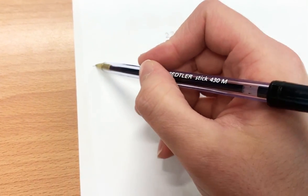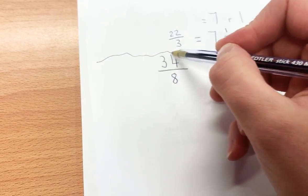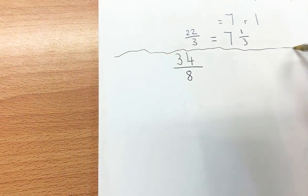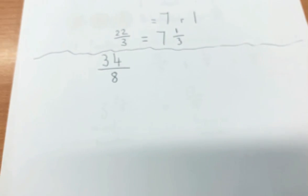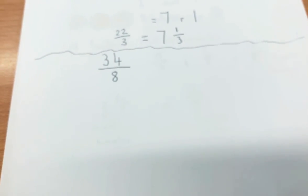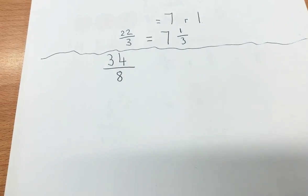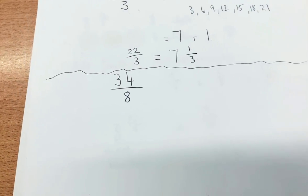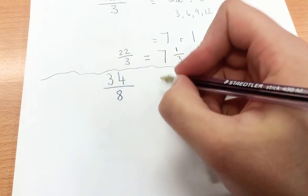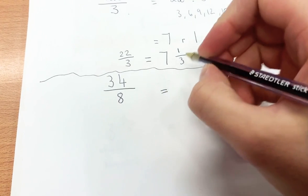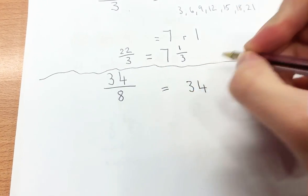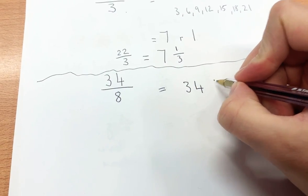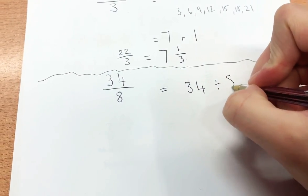So now that first one is done. And now we're going to do 34 eighths. Again, 34 eighths expressed another way is 34 divided by 8.